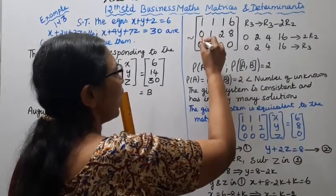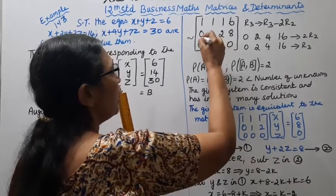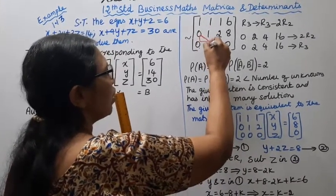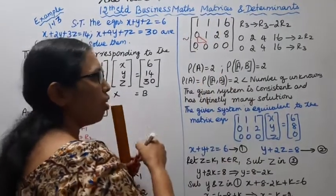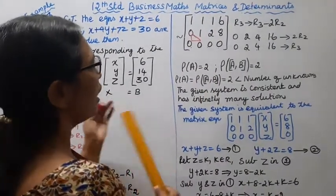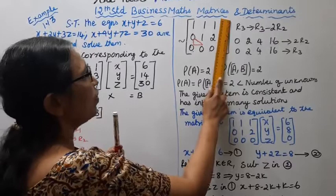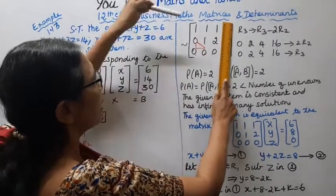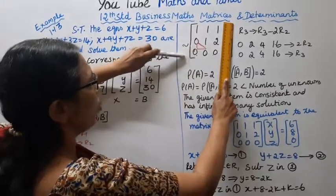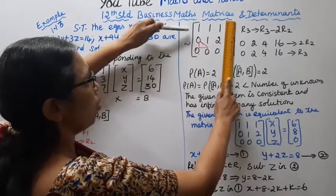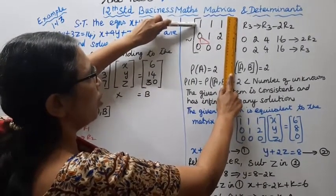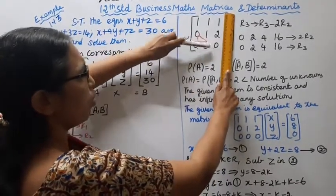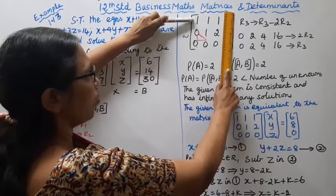Here we find the rank. The rank of A and the rank of the augmented matrix are both equal to 2, since there are two non-zero rows and one full zero row.